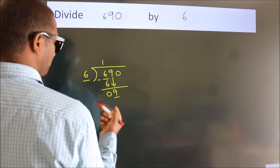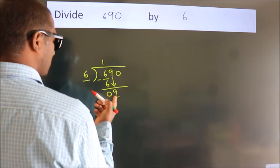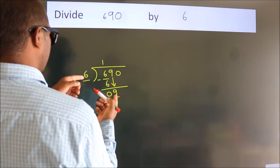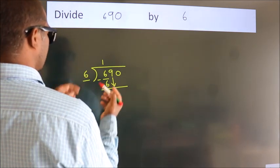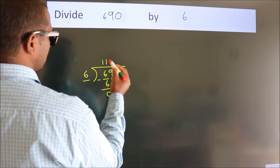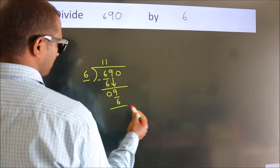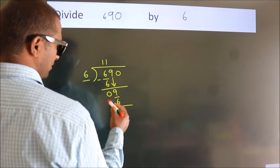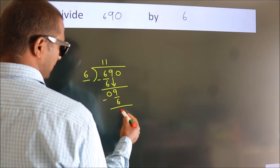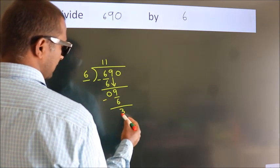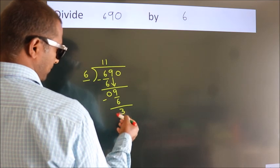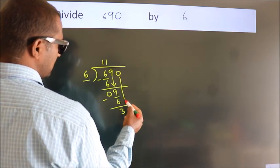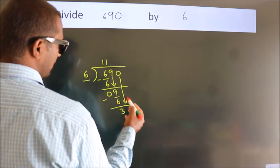So, 9. A number close to 9 in the 6 table is 6 once, 6. Now we subtract. We get 3. After this, bring down the beside number.